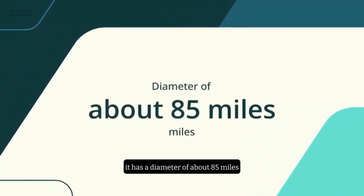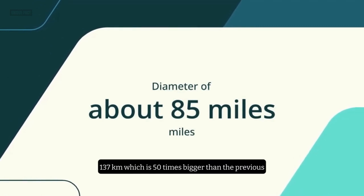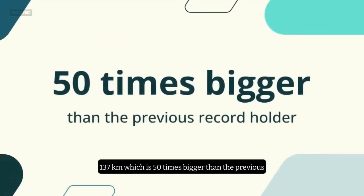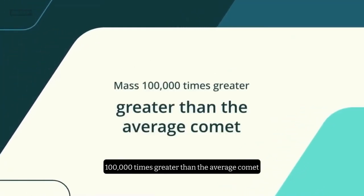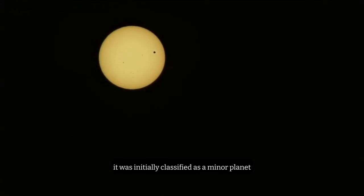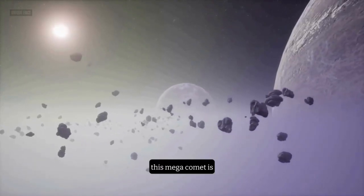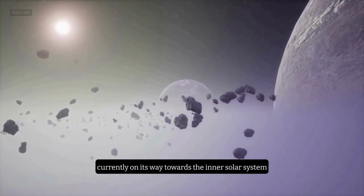It has a diameter of about 85 miles (137 kilometers), which is 50 times bigger than the previous record holder, and a mass 100,000 times greater than the average comet. It's so big, it was initially classified as a minor planet.